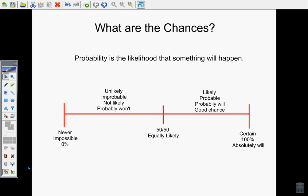You can measure probability on a continuum. Things can happen never or be impossible, all the way up to absolutely 100% certain that they absolutely will happen.